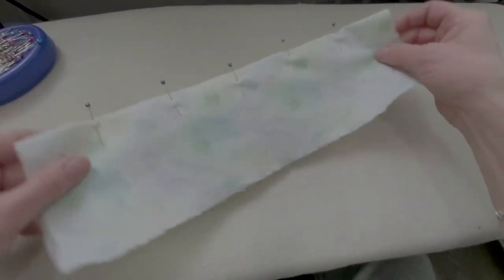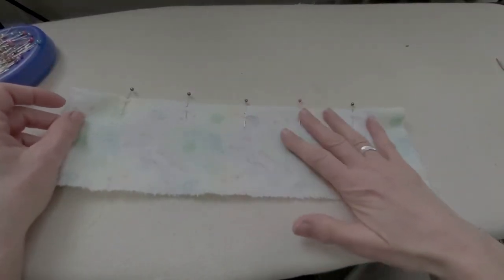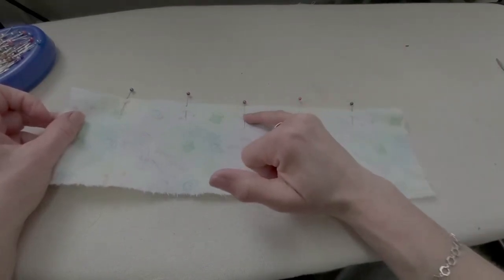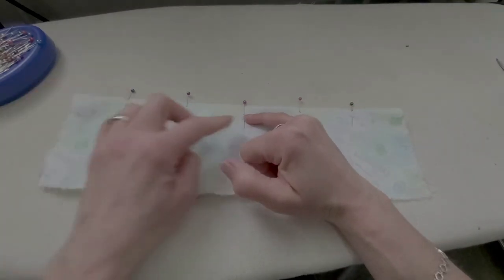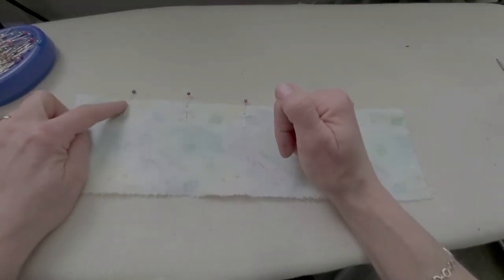Now I'm going to sew this just like two separate darts. I'm going to start in the center, come down to that one point the same way I did the single point dart, and then come from this side down to that point.